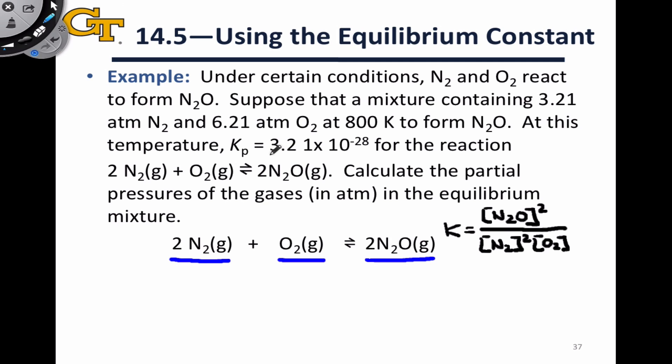The K value is given here. It's 3.21 times 10 to the negative 28. So intuitively, we can see that K is fairly small, so our equilibrium concentrations should heavily favor the reactant side. We're given initial conditions as well in the form of partial pressures of the reactants and products: 3.21 atm of N₂, 6.21 atm of O₂, and no N₂O. It's not mentioned here, and whenever it's not mentioned, you can assume that the initial concentration of the product is zero. So we can immediately write the initial line for the ICE table here. We've got 3.21 for N₂, 6.21 for O₂, and zero for N₂O, and all of these are in atmospheres.